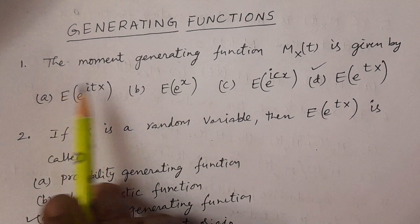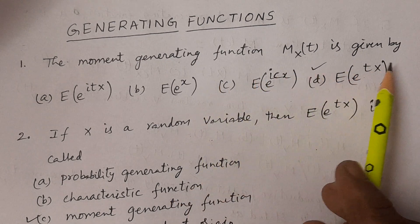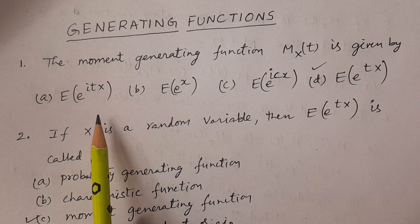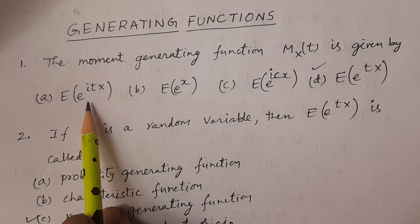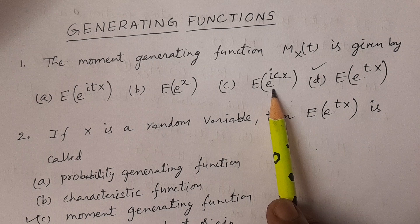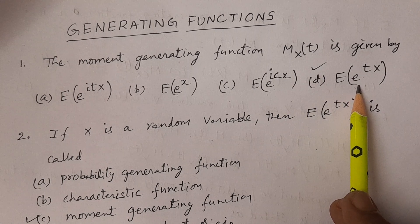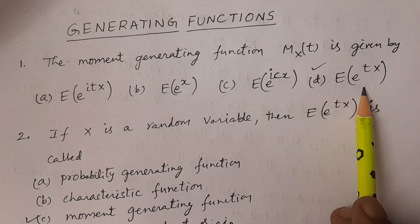Question number 1. The Moment Generating Function MXT is given by — options: A. Expectation of e power itx. B. Expectation of e power x. C. Expectation of e power icx. D. Expectation of e power tx. The MXT formula is expectation of e power tx. Moment Generating Function MXT is calculated by expectation of e power tx.